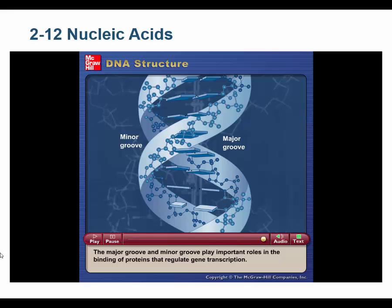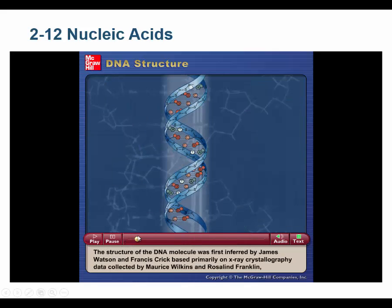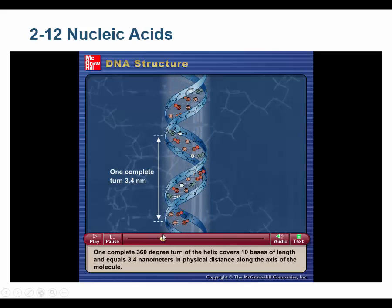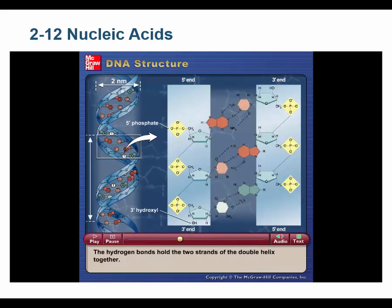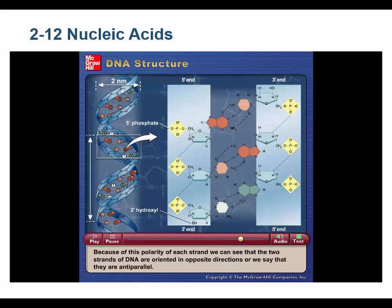That's DNA in a nutshell, but there's a lot of architecture you don't have to memorize. For example, you don't need to know that 10 bases give you 3.4 nanometers. You do have to know that DNA is a double-stranded helix, that a purine always binds a pyrimidine via hydrogen bonds in the center. Specifically, adenine always binds thymine, and guanine always binds cytosine. The anti-parallel nature of the DNA double helix is also important.